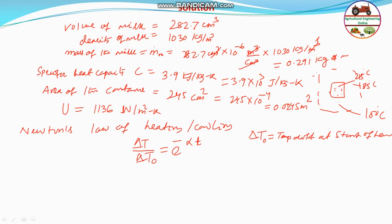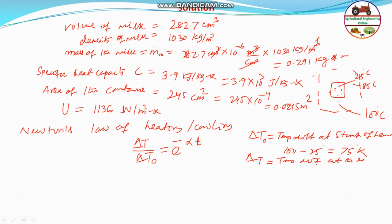The milk starts at 25°C and steam is at 100°C, so ΔT₀ = 100 − 25 = 75 K. Note that since we are taking a difference, Celsius and Kelvin give the same result. ΔT at the end of heating equals 100 − 85 = 15 K.